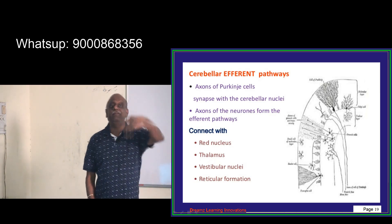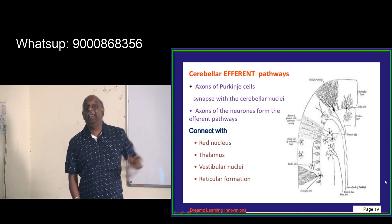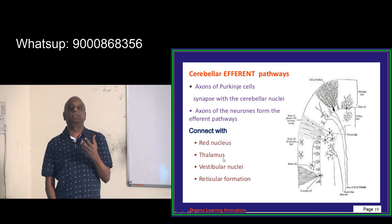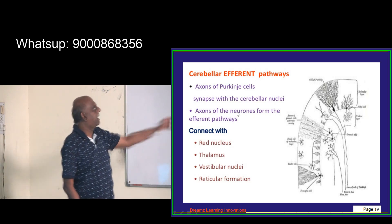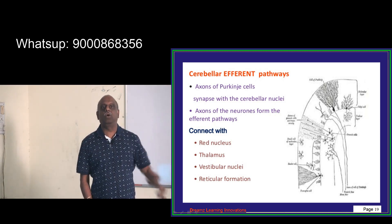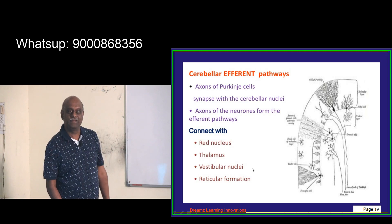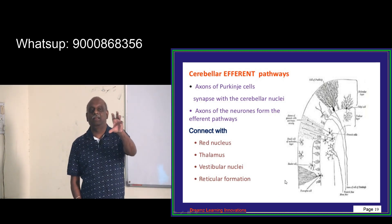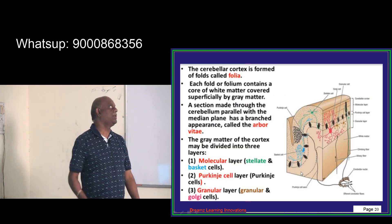Looking at the cerebellar efferent pathway — the efferents going out of the cerebellum toward the cortex — the cerebellar efferents are formed by the axons of the Purkinje cells. They synapse with the cerebellar nuclei. The efferents then leave the cerebellum and connect with the red nucleus at the midbrain level, the thalamus, the vestibular nucleus in the medulla, and the reticular formation in the midbrain.